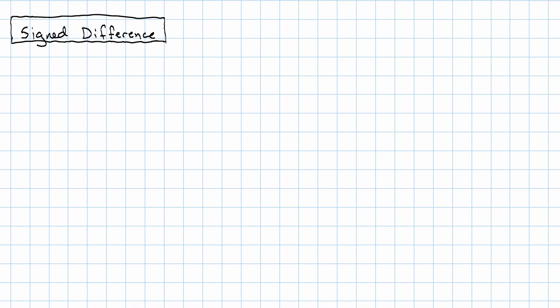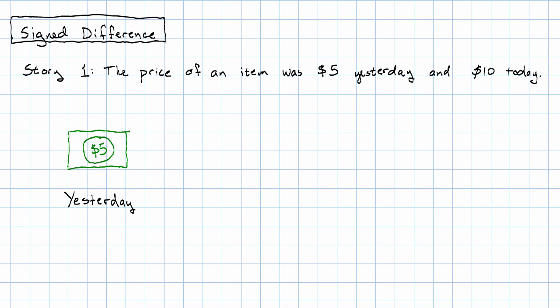So suppose we have a quantity that starts at 5 and goes to 10. Let's see, when might that happen? Oh, I know. Suppose the price of an item was $5 yesterday and $10 today.